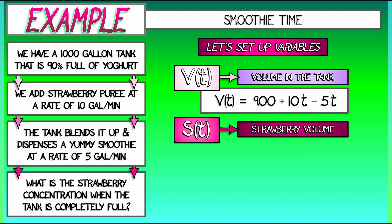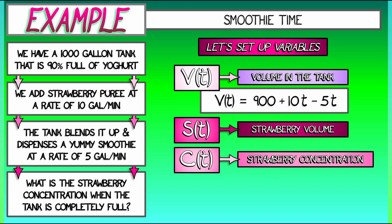Our last variable, the thing that we are going to care most about, is C of t. That is the concentration of strawberry mixture in the smoothie. That's what the problem is asking for. What's a concentration? I take the amount of strawberry stuff, S of t, and I divide by the total volume, V of t.